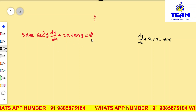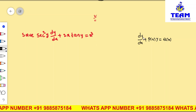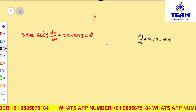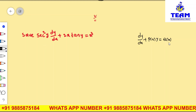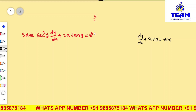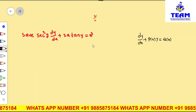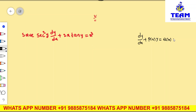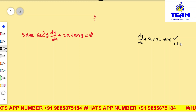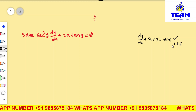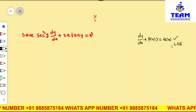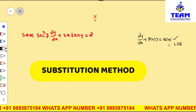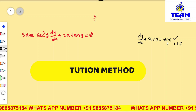Here we have sec²y, so if you divide throughout by sec²y, the left side gives dy/dx, but the right side becomes x³/sec²y, which is not a function of x alone. So we are unable to apply the standard linear differential equation method directly.